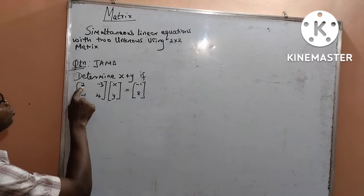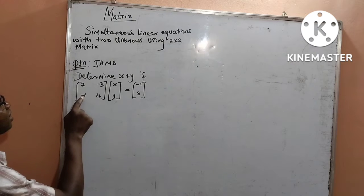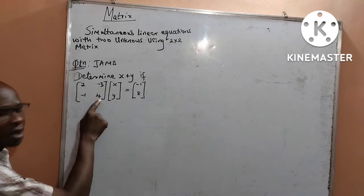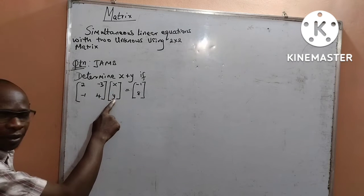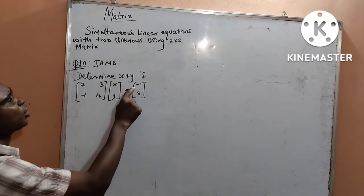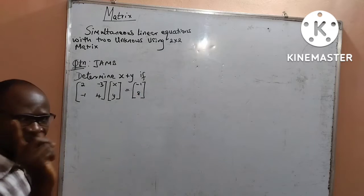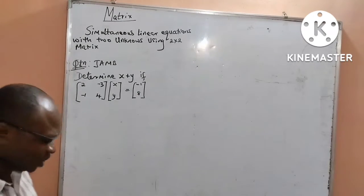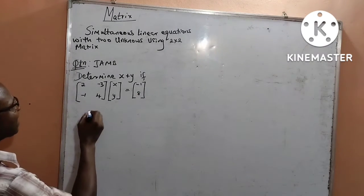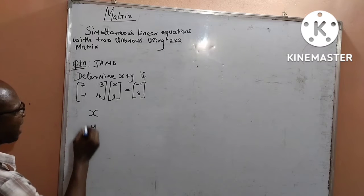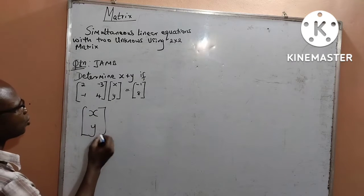That is, the matrix [2, -3; -1, 4] multiplying the two unknowns [x; y], equated to a 2x1 matrix which is [-1; 8]. How we can solve this to get that x and y, the two unknowns?